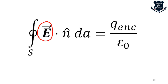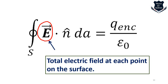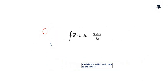Now, what does the E in Gauss's law represent? It represents the total electric field at each point on the surface. Literally it means the total electric field at each point on the surface, though symbolically we denote it as the total electric field on the surface.